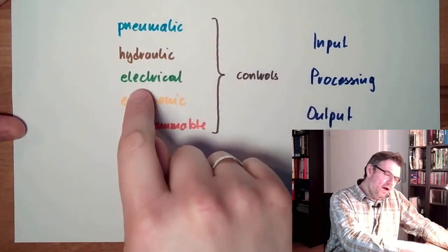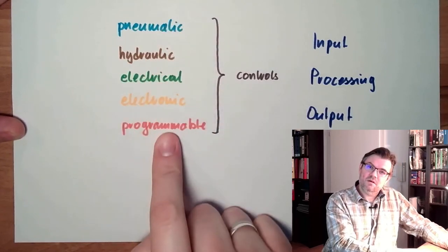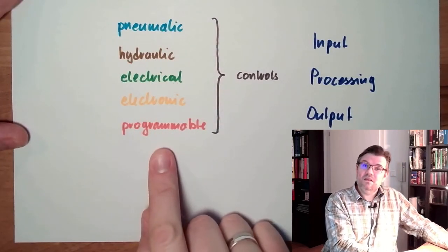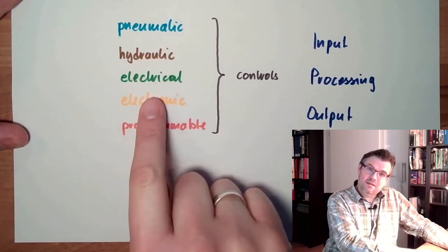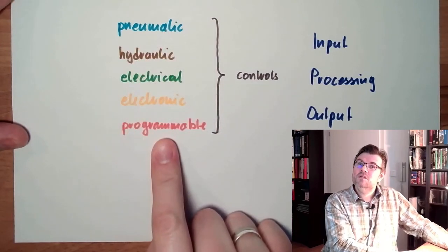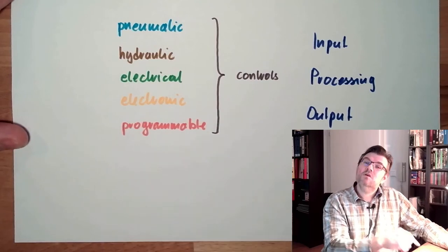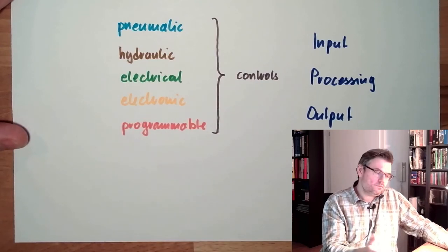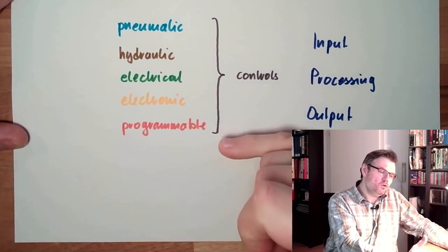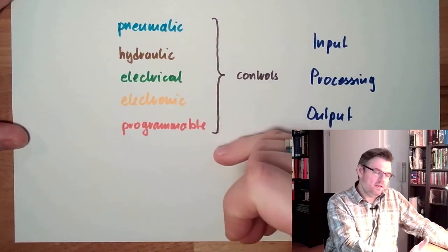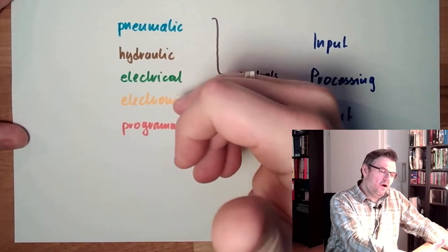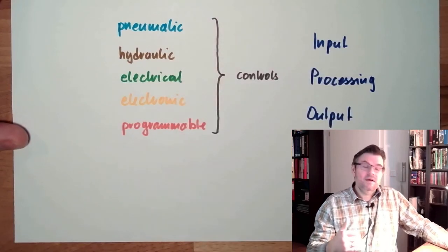However, all the other control stuff, they are still used. There is no control technology which was simply replaced, it was enhanced. Usually the most complex controls are programmable, however sub-automatics or something like this are electrical, hydraulic.